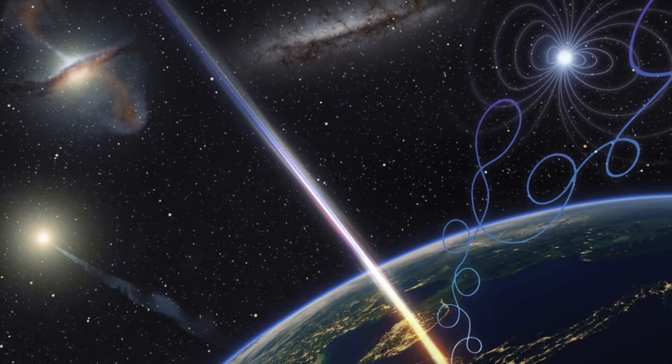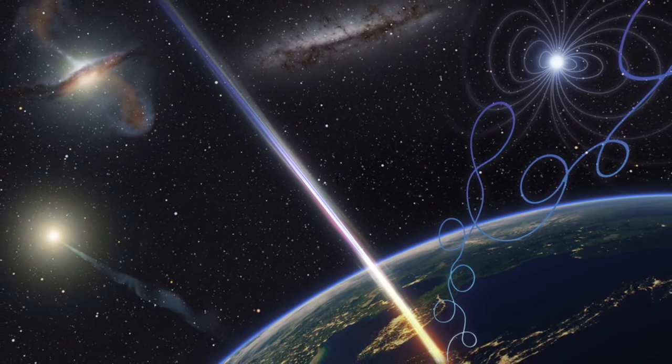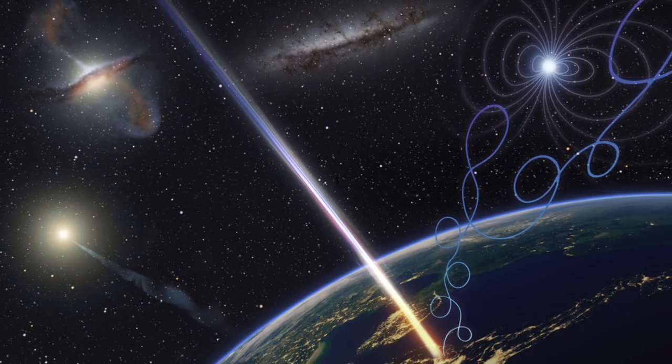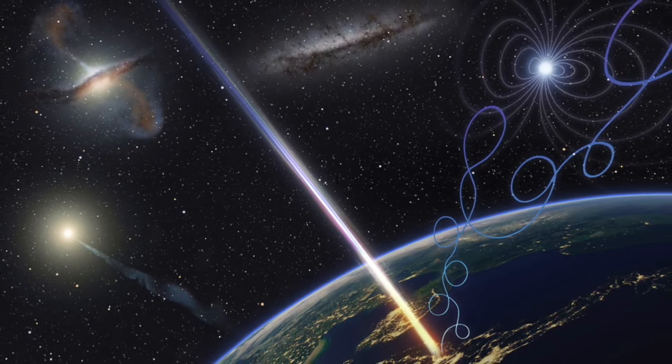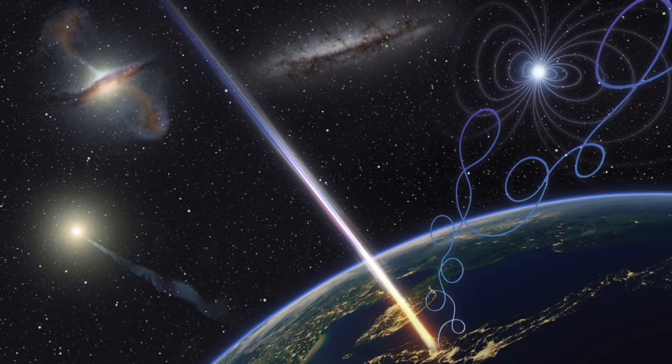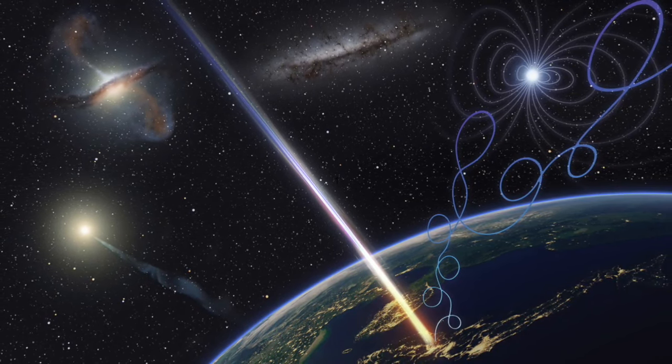Cosmic rays are high energy particles that come from a variety of sources in space. Most of them are protons. The rest are other bare nuclei or electrons. Some come from the sun, others from outside the solar system but within the Milky Way galaxy, and yet others, including the most energetic, from outside our galaxy.